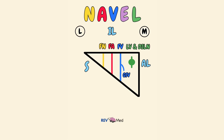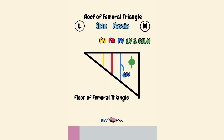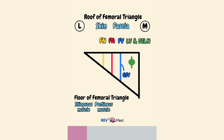That's it for the content and labeling. The roof of the femoral triangle is made of the skin and the fascia. The floor, from lateral to medial, is the iliopsoas muscle, the pectineus muscle in the middle part, and the adductor longus muscle as the most medial part.